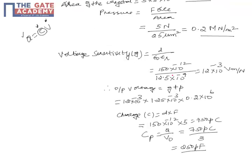The output voltage is the product of voltage sensitivity, the thickness of the crystal, and the applied pressure. Substituting the values: voltage sensitivity is 12×10⁻³, the thickness from the given dimensions is 1.25×10⁻³ m, and the pressure is 0.2×10⁶ N/m². Computing this gives an output voltage of 3 volts across the crystal.